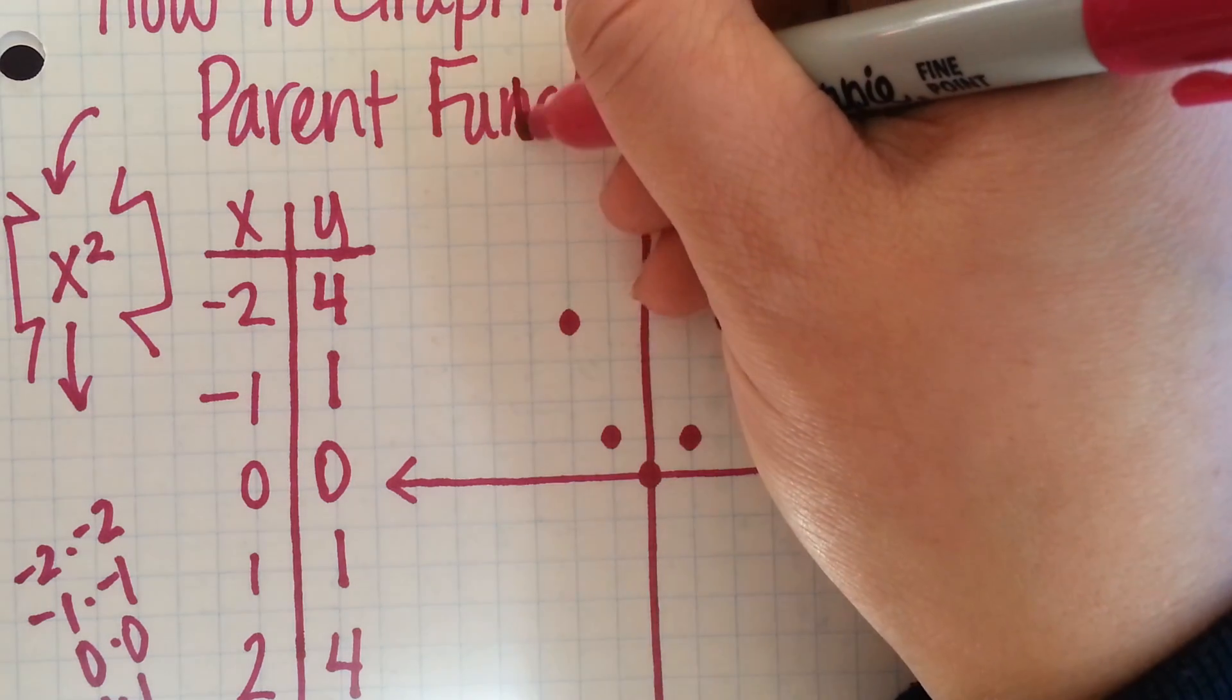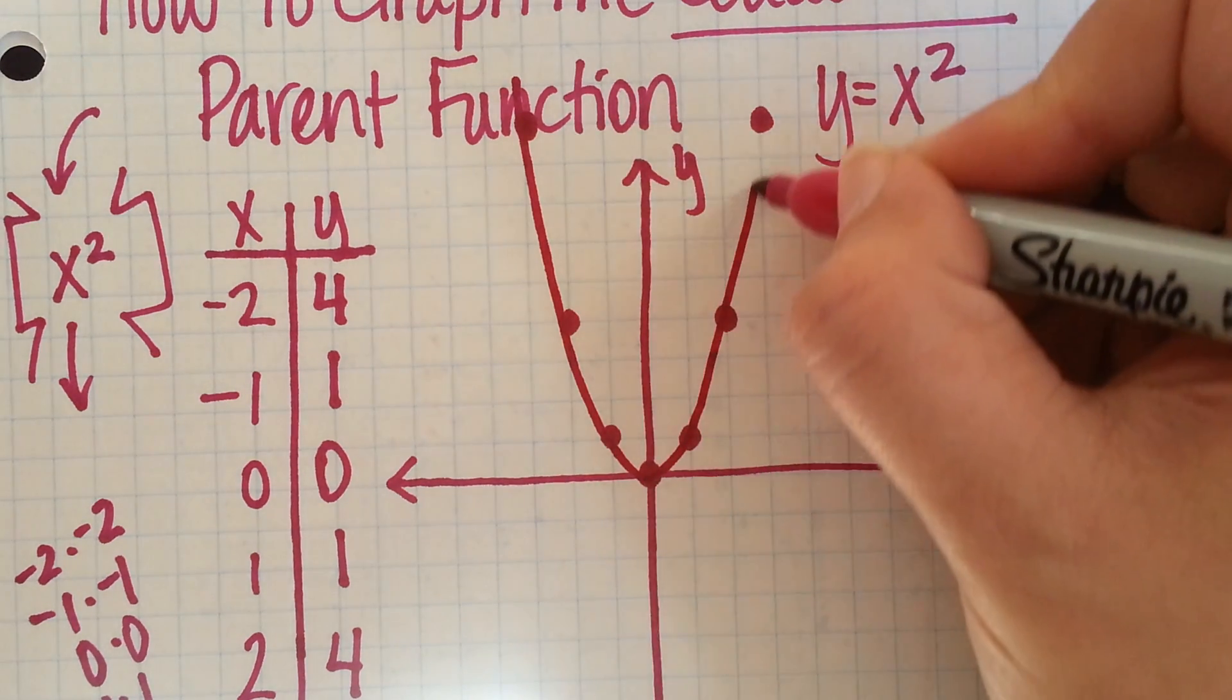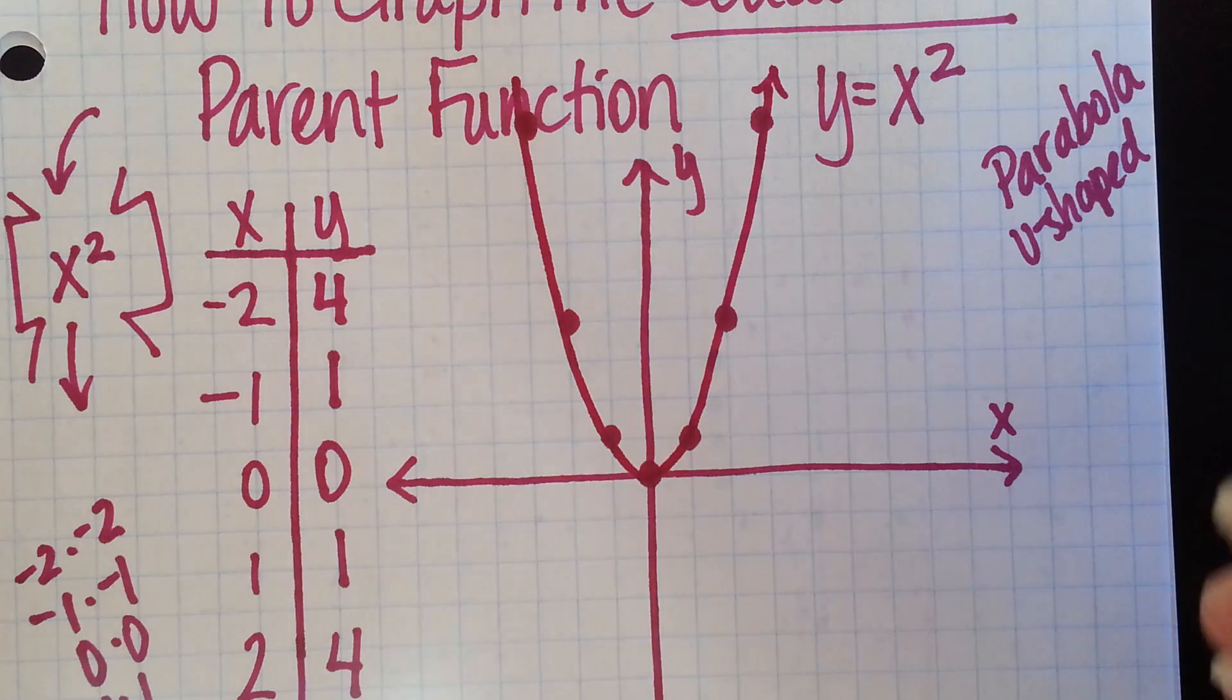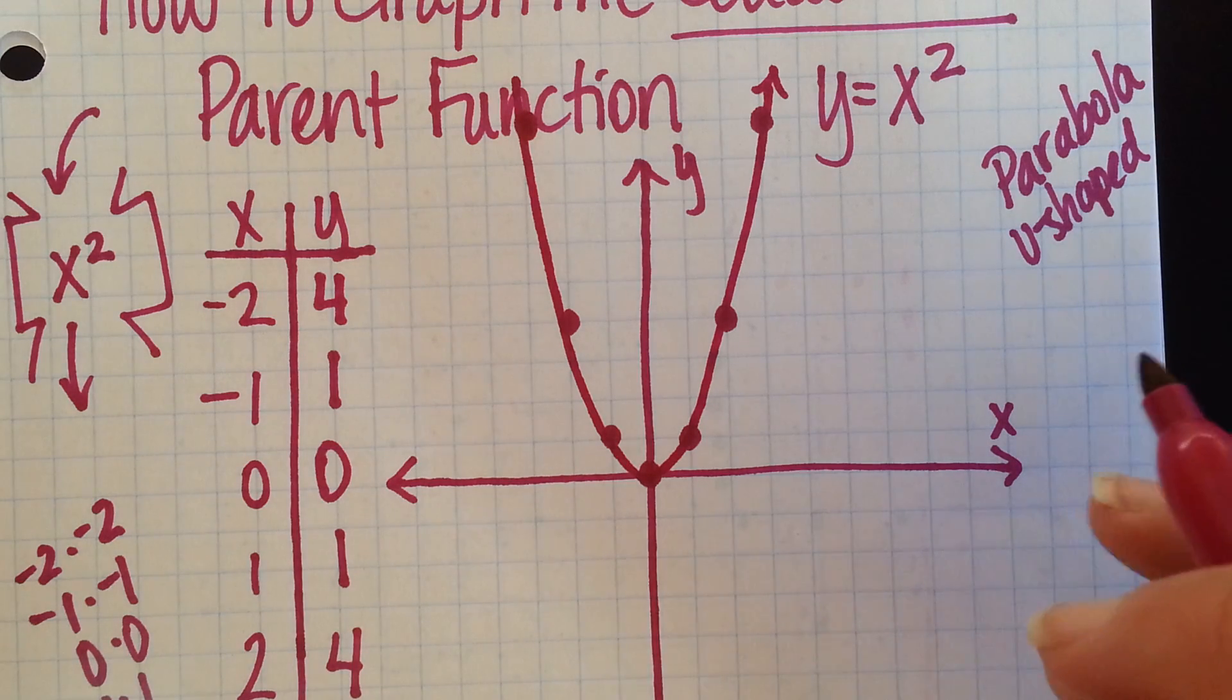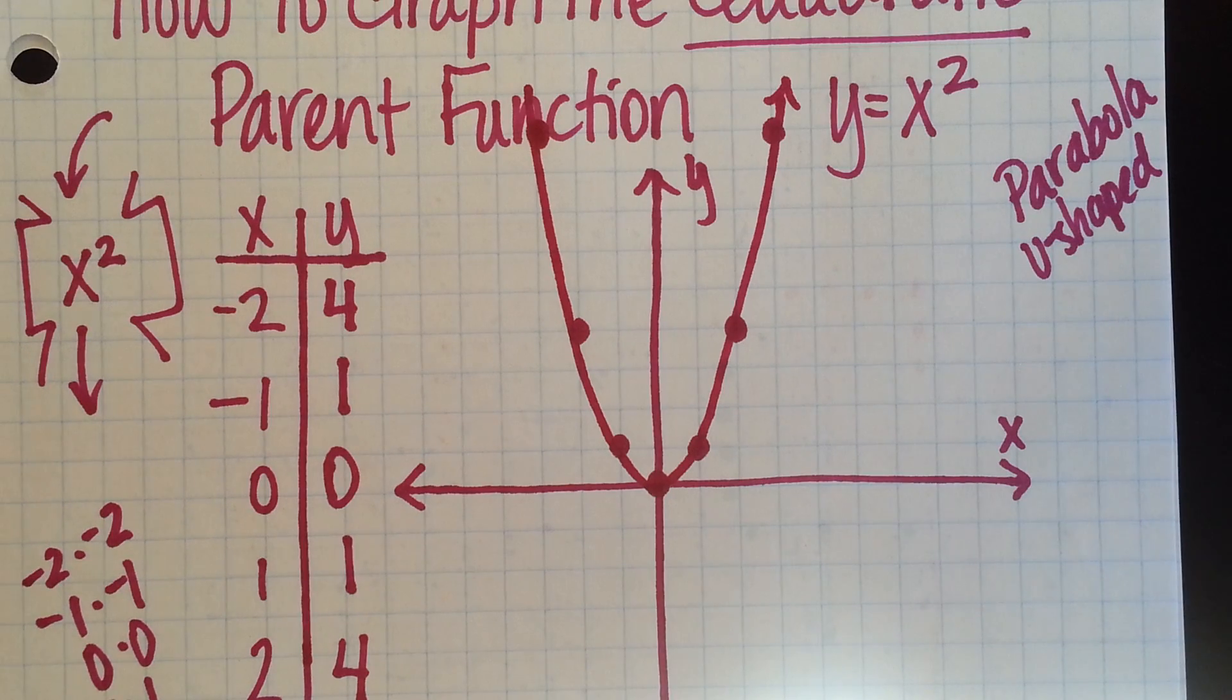Now, when we connect this, we want to connect it with a smooth curve. We don't want to necessarily have it come to a point. We want it to be curved. So, this is what gives us our U shape. That's how you would draw a quadratic parent function, or how we would graph y equals x squared.